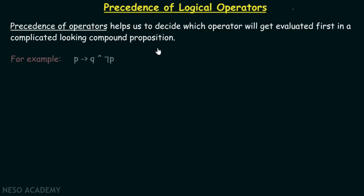Let's consider one example of a compound proposition: P implies q and not P. This compound proposition is composed of implication, conjunction, and negation. Which operator will get evaluated first is quite important for us to know.